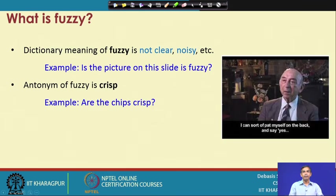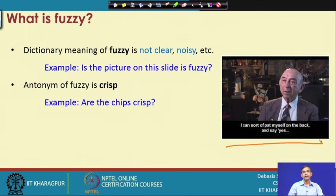The word fuzzy may not be new to us. If we search the dictionary, the meaning of fuzzy is 'not clear' or 'noisy.' As an example, we see one figure here. Sometimes we see that a picture on a slide is not clear, so we can say the picture is fuzzy — that means not clear. We may say that there is much noise in the image, so the image is noisy, image is fuzzy.